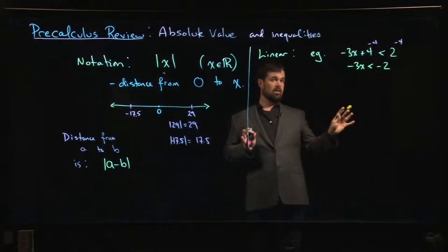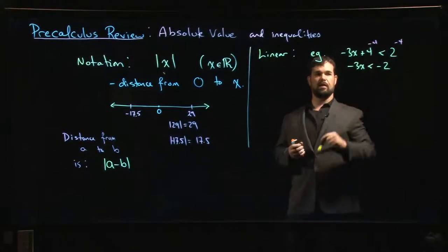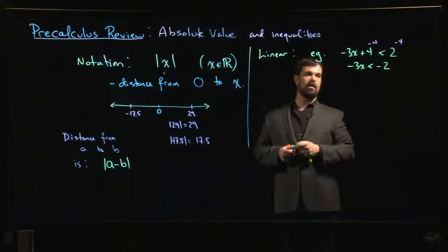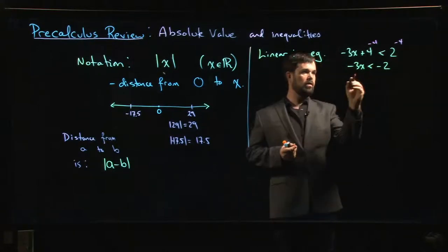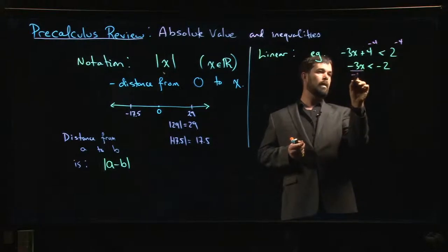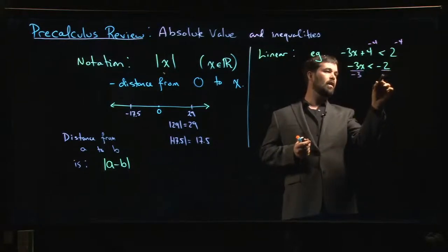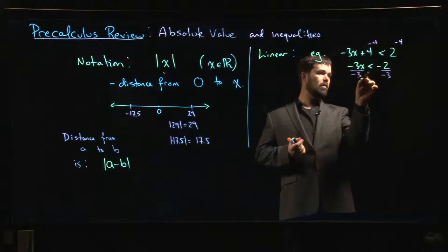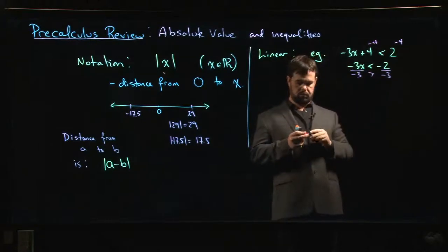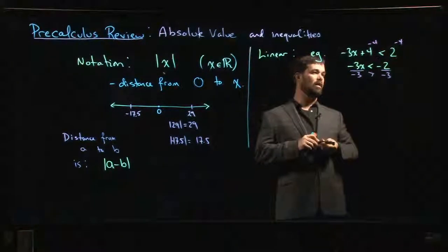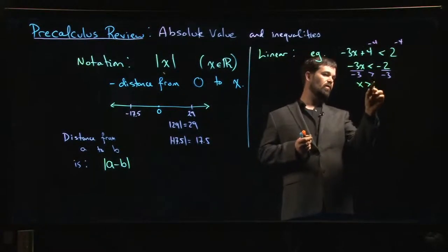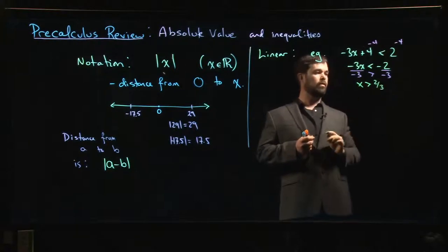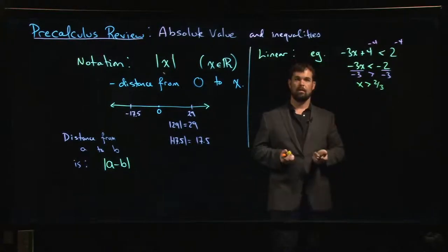But you got to watch out. Because if you divide or multiply by a negative number, it flips that thing around, so you got to be careful. One way to see that is you can divide by minus 3, as long as you remember that that's going to flip the side. And that's going to leave you with x bigger than, those negatives cancel, 2 thirds. So that's one way to do it.